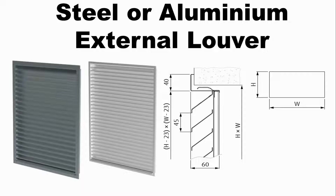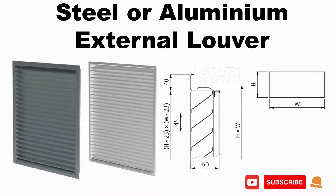Hello everyone. Today I would like to show you how to create a steel or aluminium external louver Revit family. In this video, I will create two parts of the family — the louver blade and frame — and then load and combine them into the main family. I will refer to dimensions in the picture to create the parameters. Before going to Revit, I would like to request that you subscribe to the channel and click the notification bell for the next video.